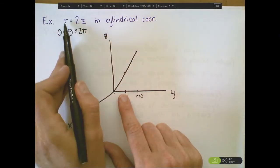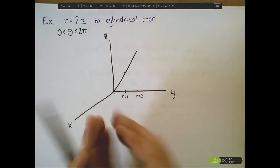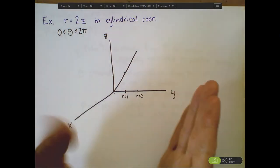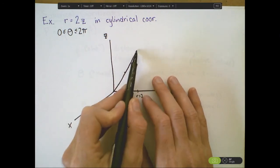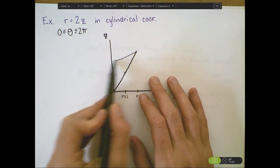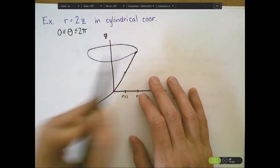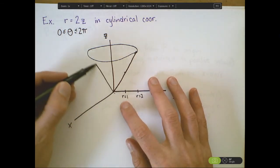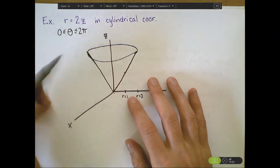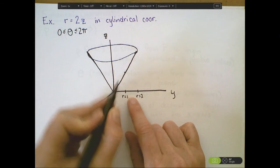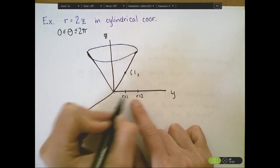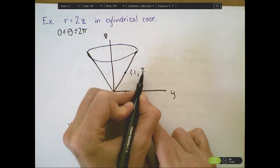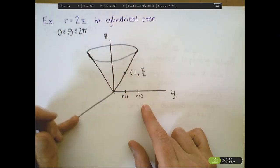Essentially, this r equals 2z is saying that as the radius of this figure increases, the heights are increasing twice as fast. And I'm spinning in a full circle for each radius value. So, an example point would be the point r equals 1. Here, my theta equals pi over 2, because I'm letting the angle that's being made with the x-axis be flat here in the zy-plane.